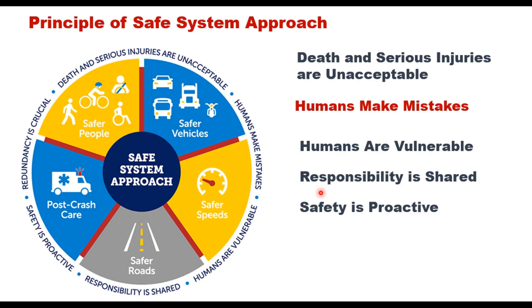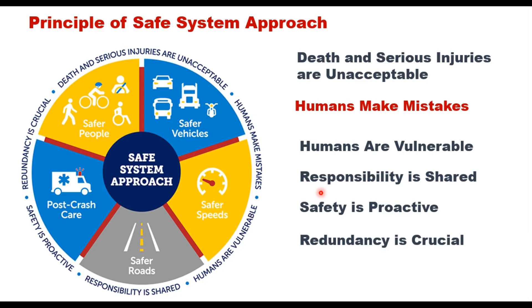The fifth principle is that safety is proactive. Proactive tools should be used to identify and address safety issues in the transportation system rather than waiting for crashes to occur and reacting afterwards. Finally, the sixth principle is that redundancy is crucial — reducing risk requires that all parts of the transportation system be strengthened so that if one part fails, the other parts still protect the people.